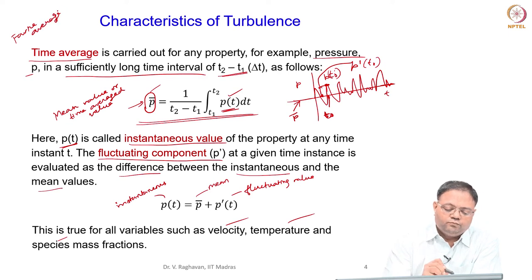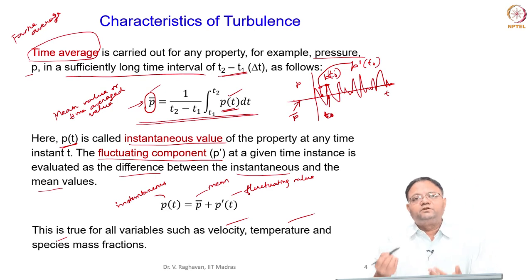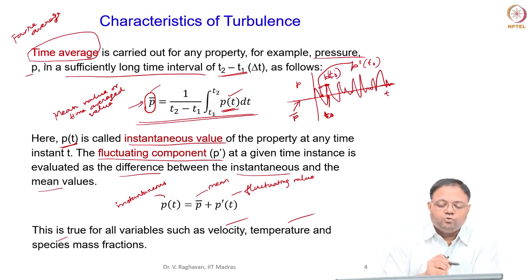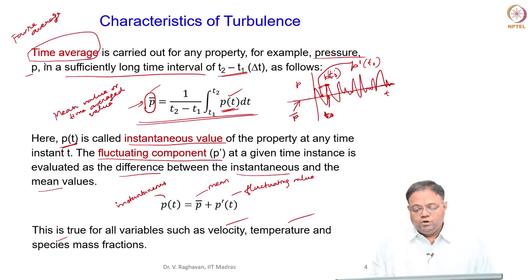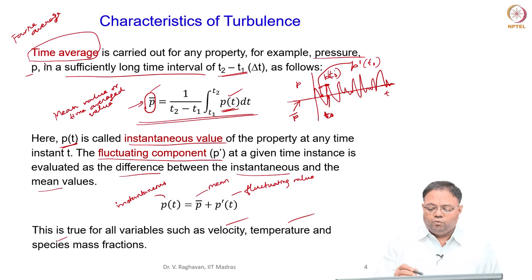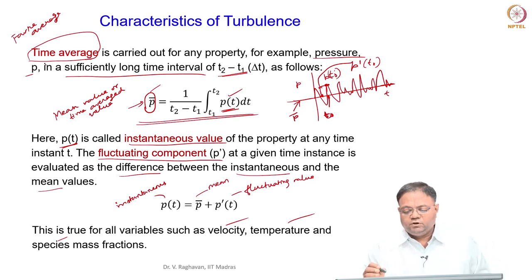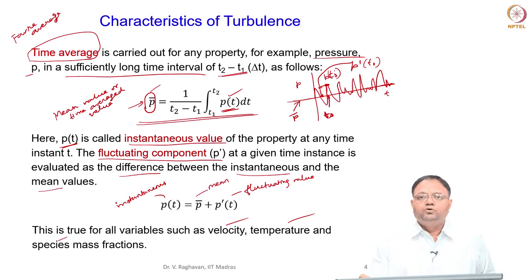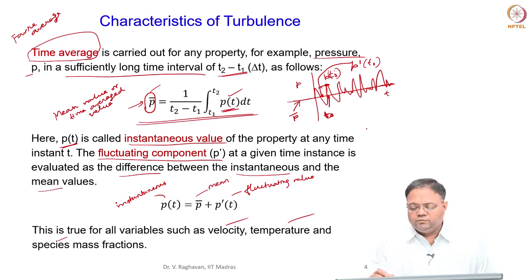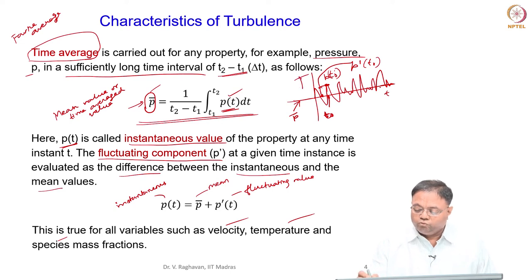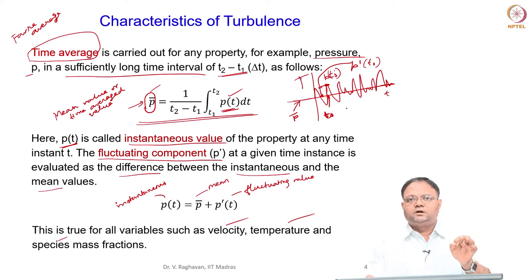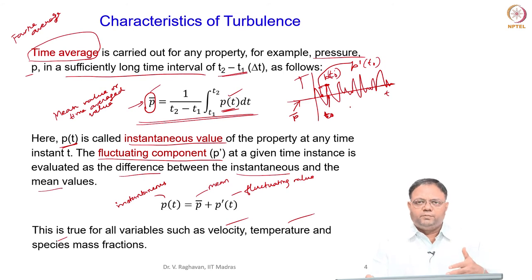For mostly incompressible flows we use time averaging; Favre averaging, which is density-weighted averaging, is not used. Time averaging is normally used for incompressible flows. It is not easy to reproduce the instantaneous value — whether measuring velocity, temperature, or any other variable — because of the random nature of turbulence.